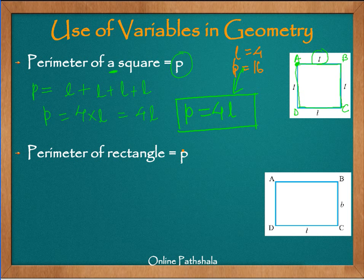Similarly, let us try to find a rule for the perimeter of a rectangle, again using p to represent the perimeter. Since it is a rectangle, we know it has a length and a breadth, but we don't know the values. So we use variable l to represent the length and variable b to represent the breadth.